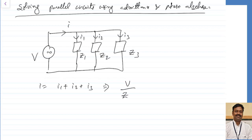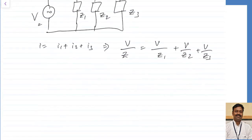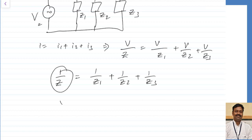I is V by the total impedance, equal to V by Z1 plus V by Z2 plus V by Z3, because the same voltage is applied across each parallel path. From this, 1 by Z equals 1 by Z1 plus 1 by Z2 plus 1 by Z3. This 1 by Z is called the admittance. Admittance Y equals Y1 plus Y2 plus Y3, where Y1 equals 1 by Z1, Y2 equals 1 by Z2, and Y3 equals 1 by Z3. The advantage is you can directly add admittances.